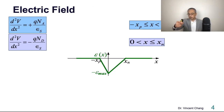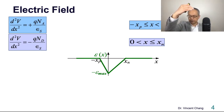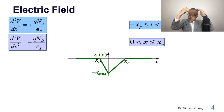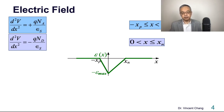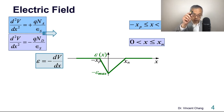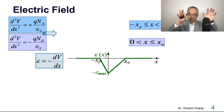Next step is integration. Remember from the previous lecture: charge, then electric field, then potential. If charge distribution is constant, then the electric field distribution is going to be linear. So let's do the integration. Pay attention to the negative sign: negative dV/dx. So we need a negative sign and x, giving negative x plus a constant.